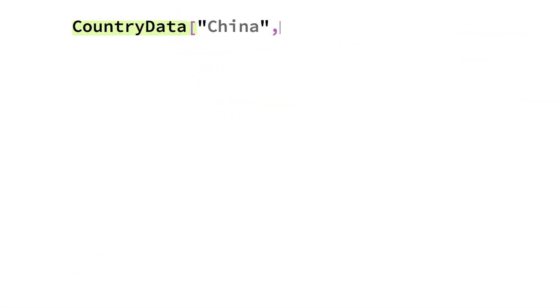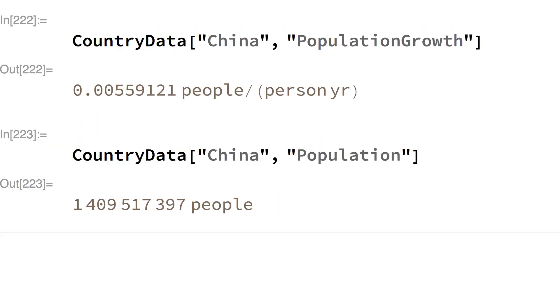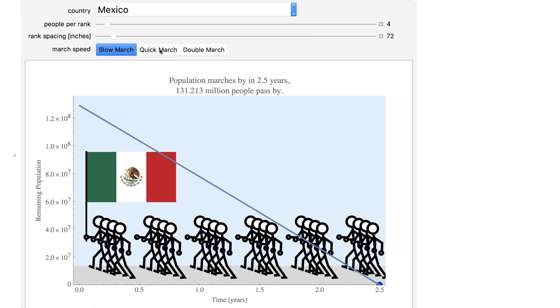This demonstration uses Mathematica's built-in function country data for the current population estimate and the annual fractional growth estimate. It estimates how long it would take the entire population of a country to march past a given spot.